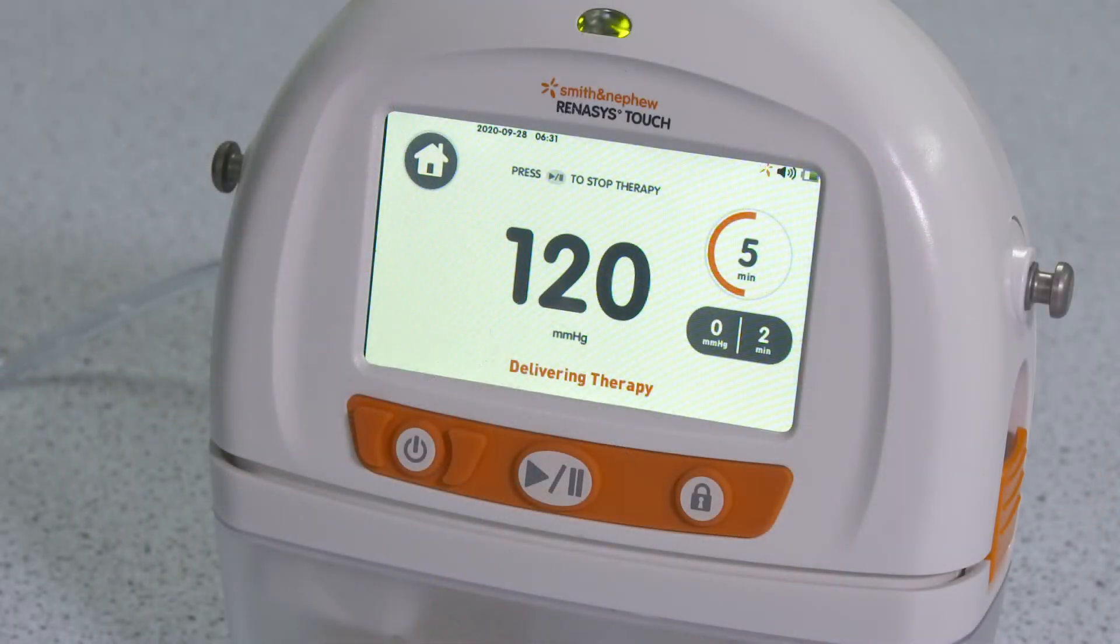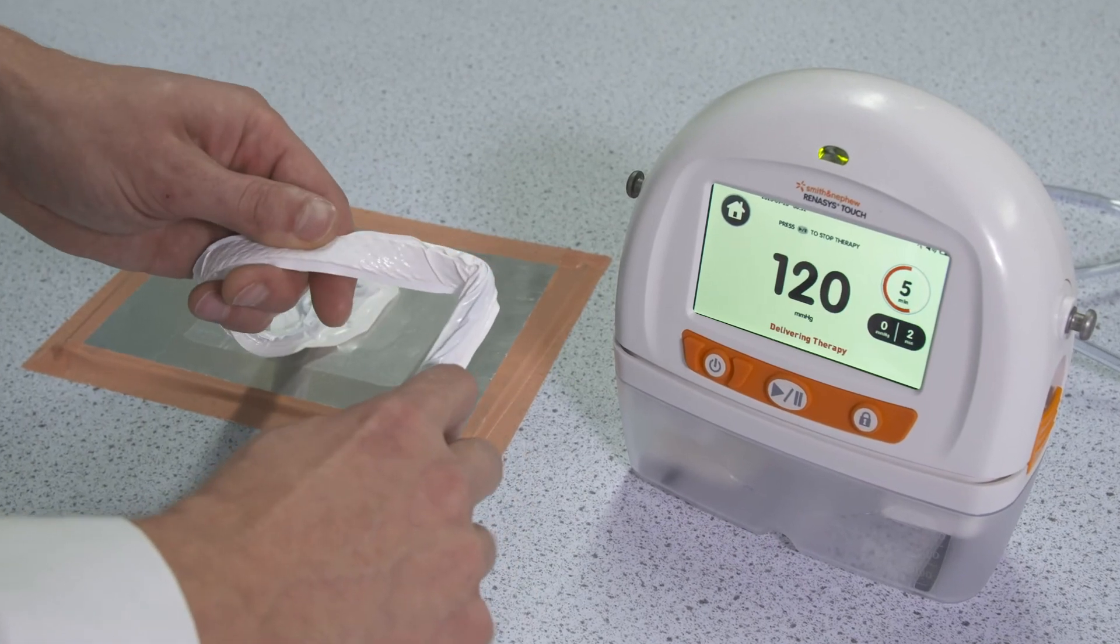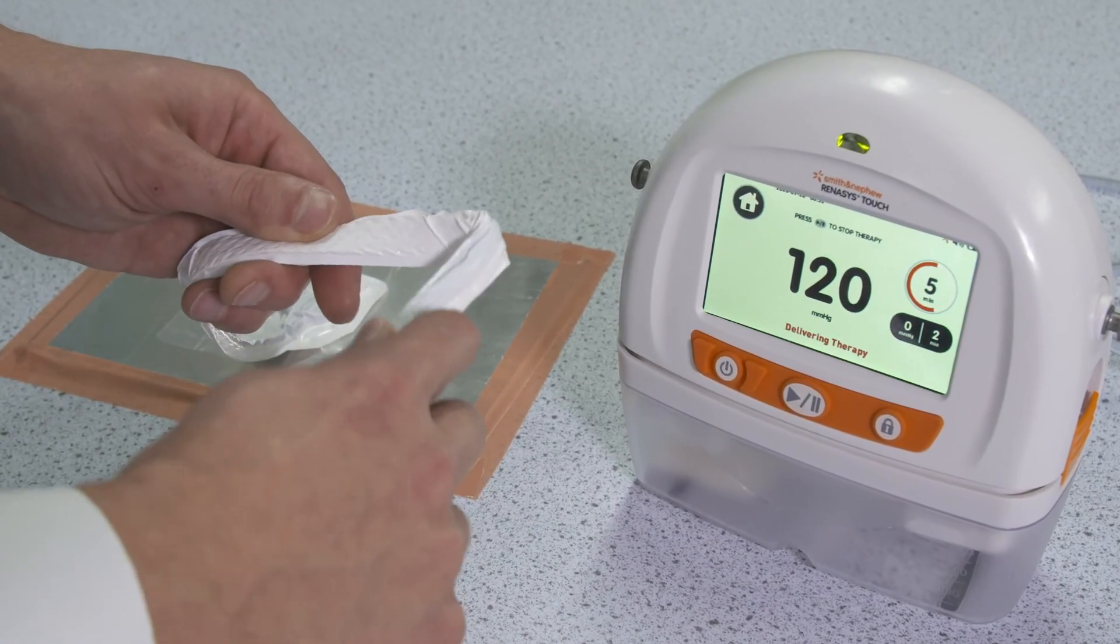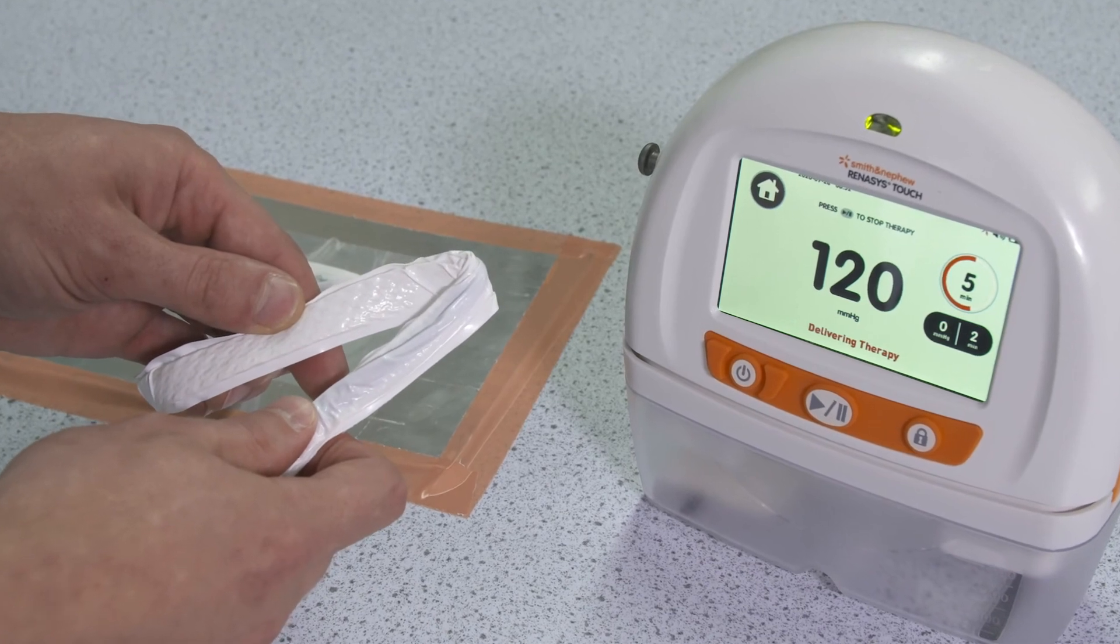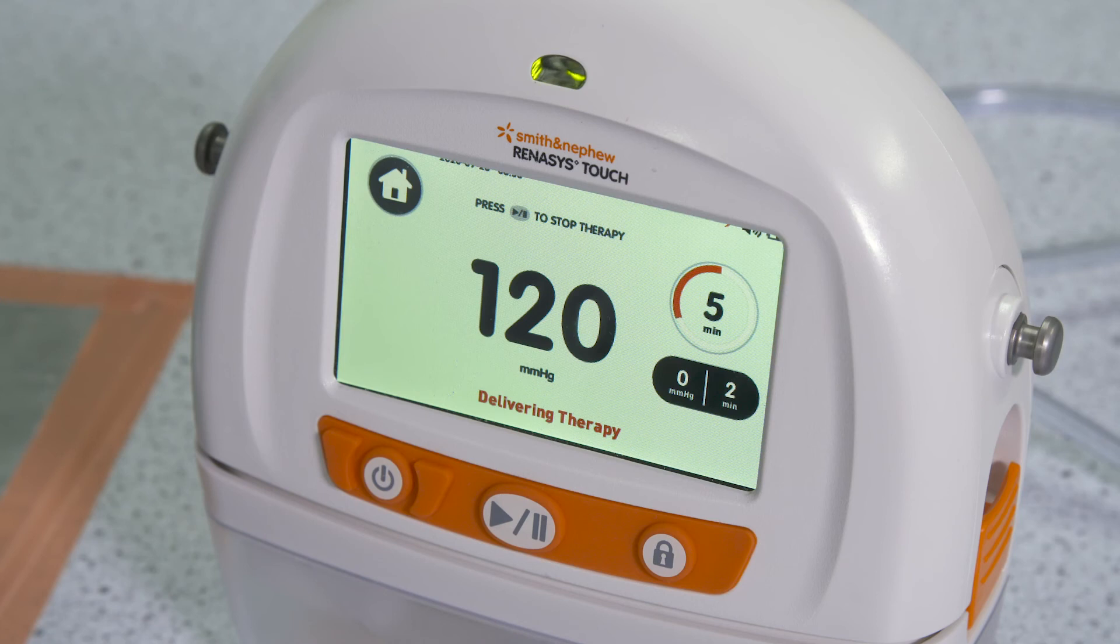The device is delivering 120 mm of mercury of negative pressure to the wound. Now we bend the flexible and conformable softport to 90 degrees and then 135 degrees. Negative pressure is still delivered to the wound. This is important, so there is no interruption to treatment.